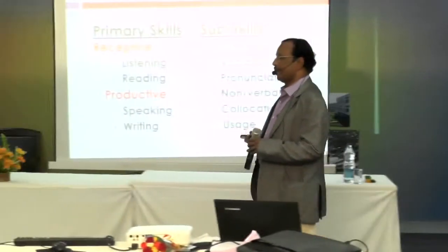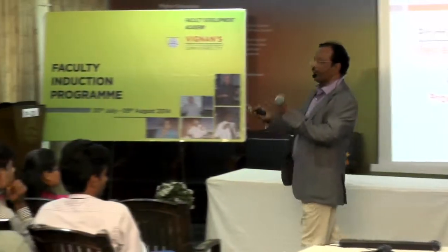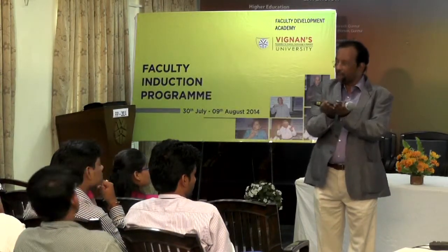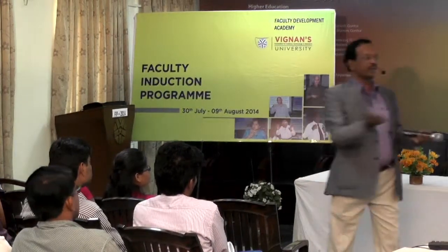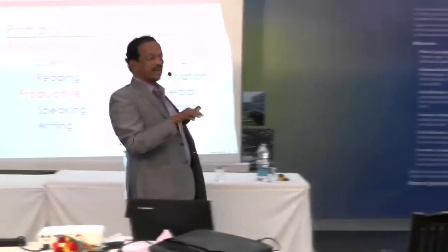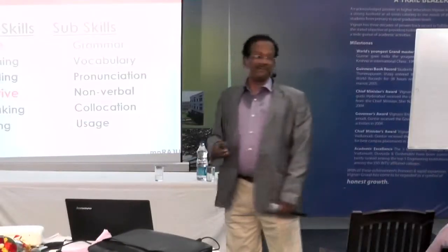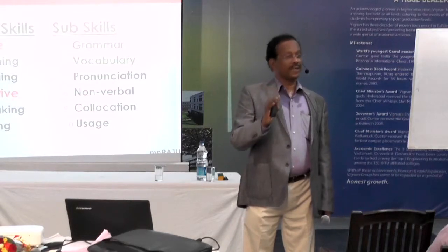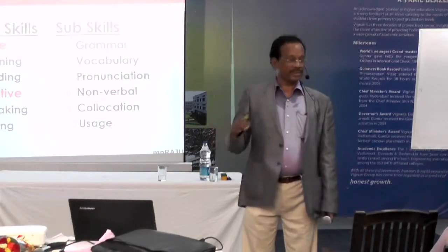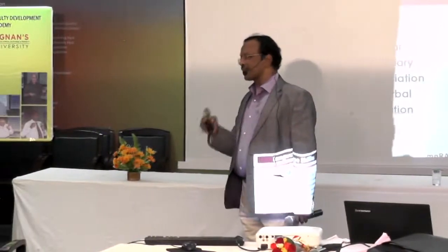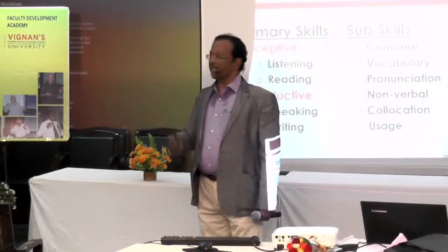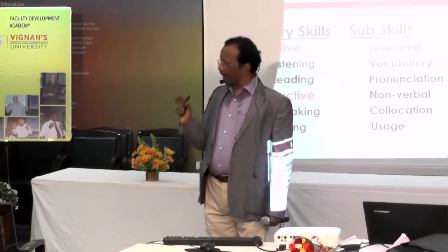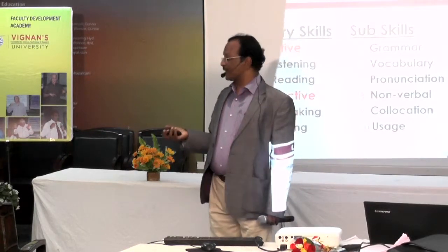Collocations — in any language, words always occur in association. Some words appear always in the companionship of other words; they co-occur, they go together. Such combinations are called collocations. And finally, usage — how to use a word. Good dictionaries tell you not only vocabulary, pronunciation, meaning, stress, and part of speech, but also how to use words. If you use a good dictionary regularly, your usage will certainly improve.